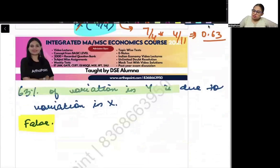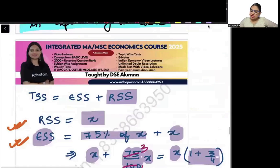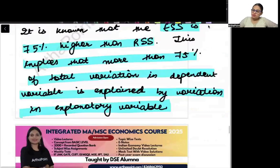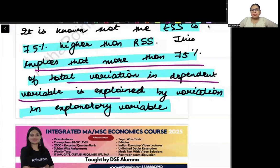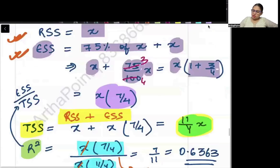It means 63% of the variation in Y can be explained due to the variation in X. So we can go ahead and say that this statement is false because it is saying 75% of variation in Y can be explained due to variation in X but that is incorrect.